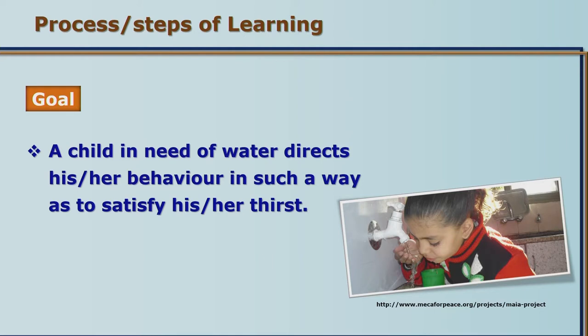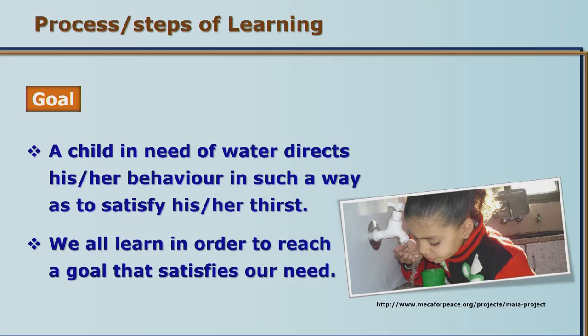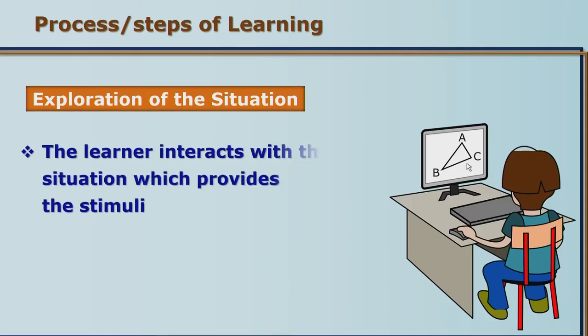For different persons the goals will be different, and depending on that, the level of motivation will also be different. We cannot make all students learn with the same motivation because they have different goals as their priorities. Having set the goal, the child faces a particular situation and explores it by interacting with it and gaining information about that situation. We call that information stimuli — information which we receive from our sense organs.